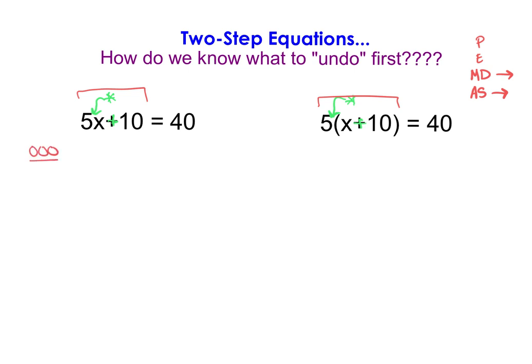Looking at the problem on the left, there are no parentheses and no exponents to undo. The next thing is multiplication and division — I do have a multiplication, so I note 'multiplied by 5.' Then I see an addition, so I note 'add 10.' That's my order of operations for the problem on the left.